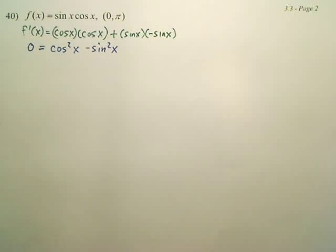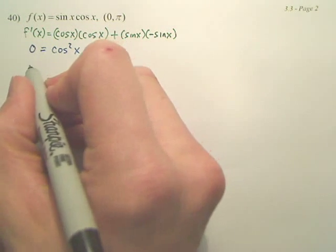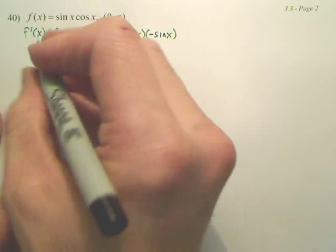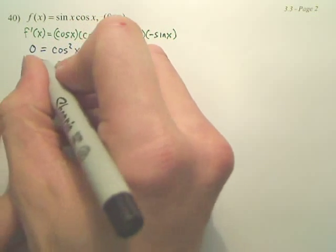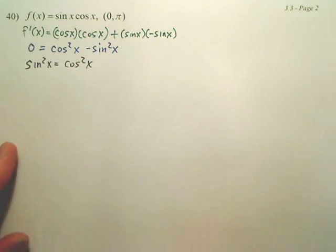That is a double angle formula. I was going to use a double angle formula, but I just thought of something. Let's try a different route. Let's see which one's better for you. Could I add this over? Could I square root both sides?